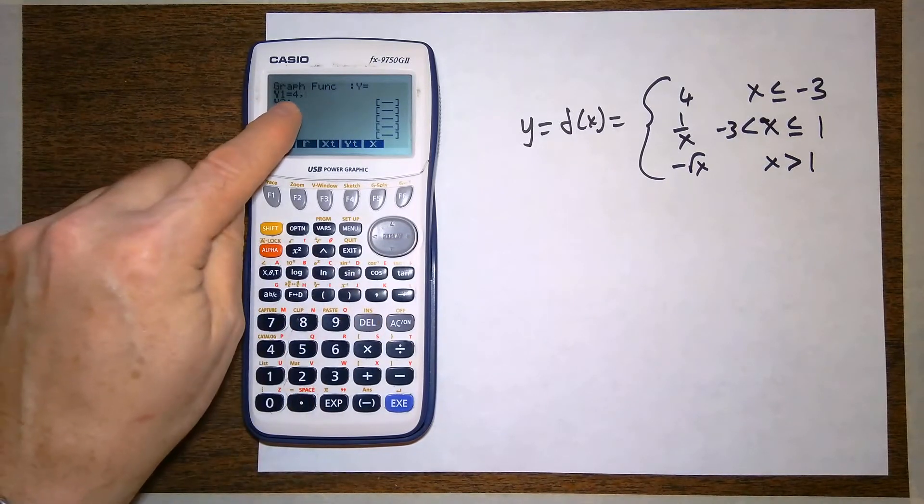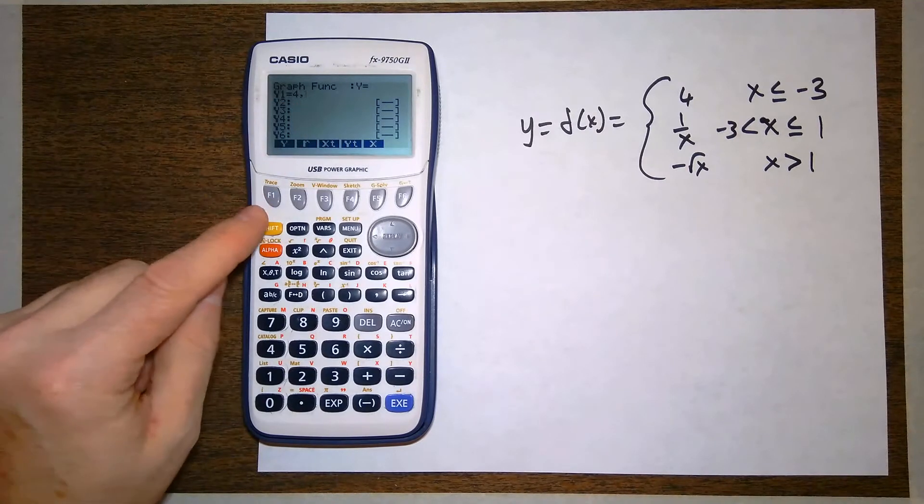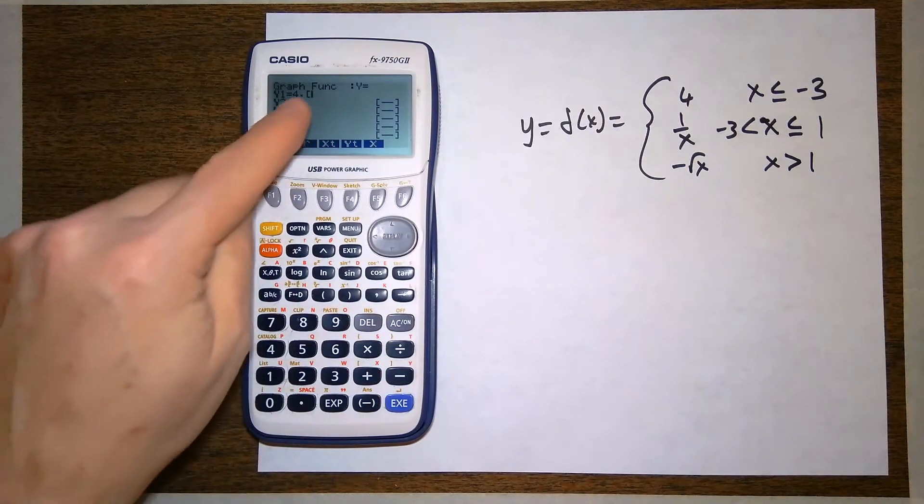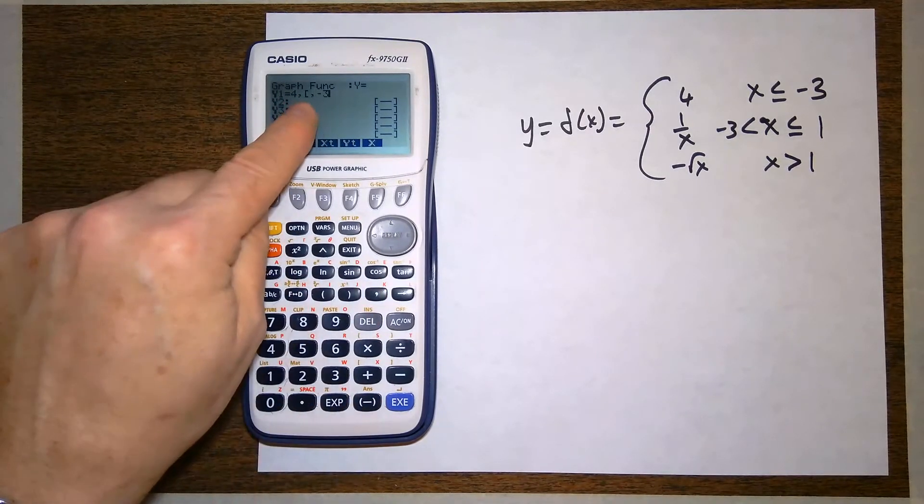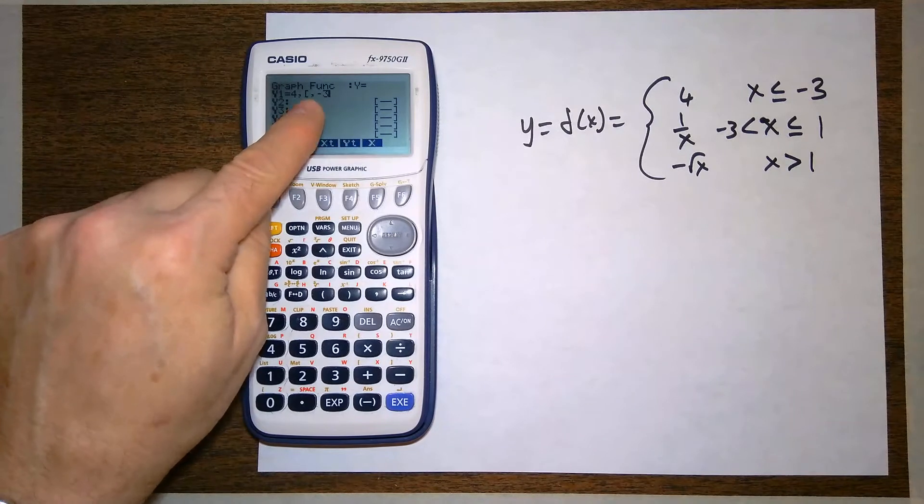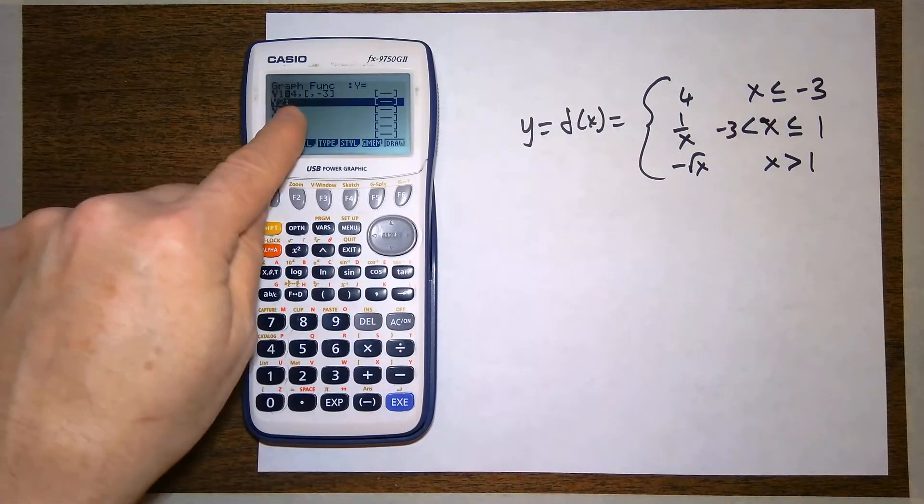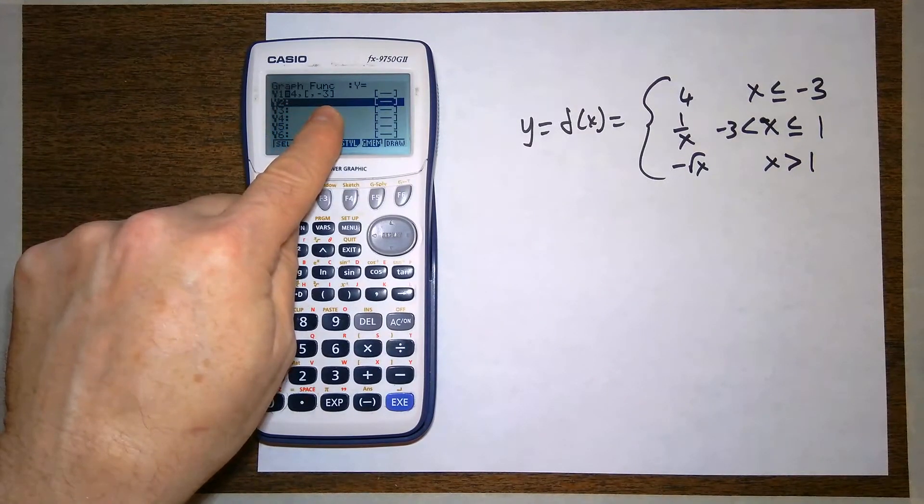comma. Now that I've got the function in there, I have to tell it what piece of the function I want. And I'm going to use that in interval notation, shift plus, from negative infinity, comma, negative 3. Notice I didn't put anything in there. It's open bracket, comma, negative 3, close bracket. So it's going to graph the line y equals 4 from negative infinity to negative 3.